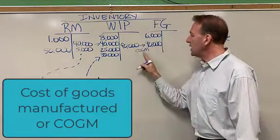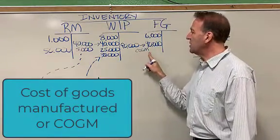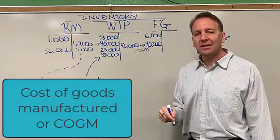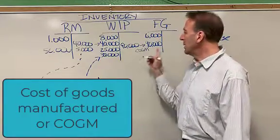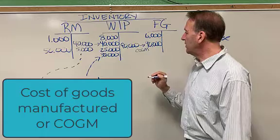So you can see here, we would debit finished goods inventory and credit work in process inventory. So it's just moving between two inventory accounts. And the term for this is the cost of goods manufactured. So I'm going to abbreviate here, COGM, cost of goods manufactured. So that $90,000 is cost of goods manufactured.